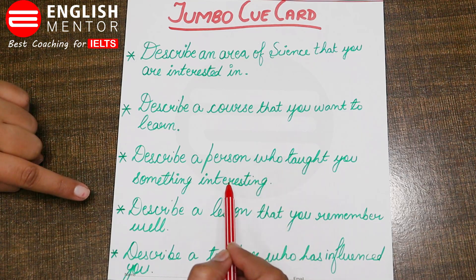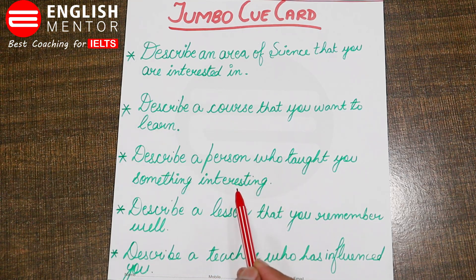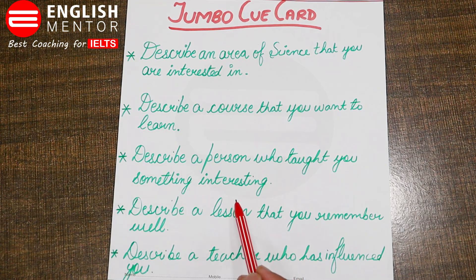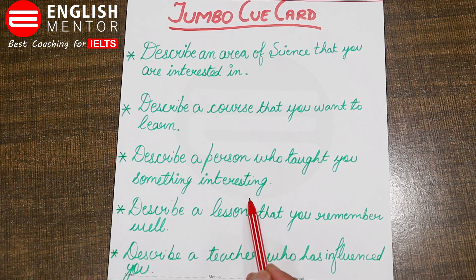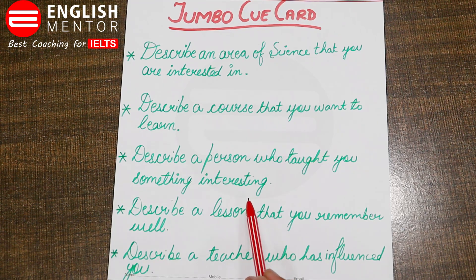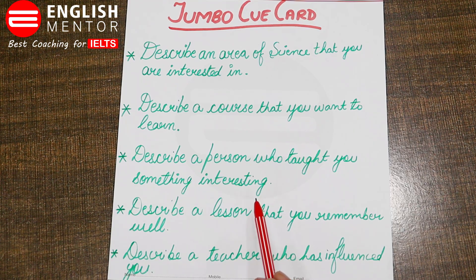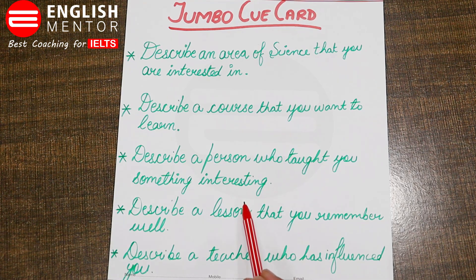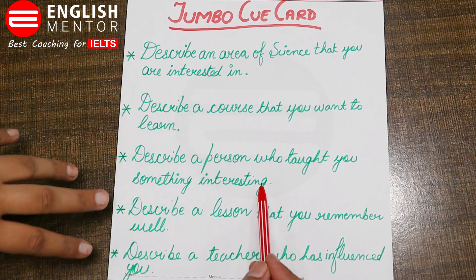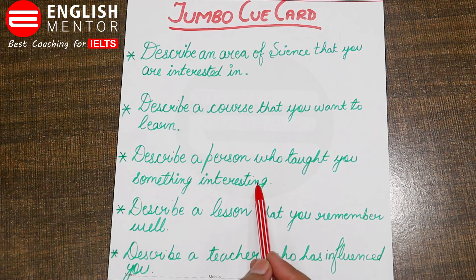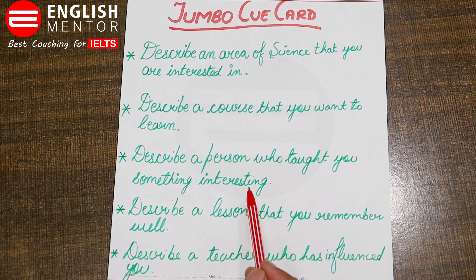The third QCard is: describe a person who taught you something interesting. You can talk about your science teacher. My science teacher studied biology, botany, and chemistry — she taught chemistry in an interesting manner. Initially I found this subject very difficult and tough, so I did not pay much attention to it. But she used different kinds of interesting strategies to push me to learn this subject, so I liked her way of teaching.